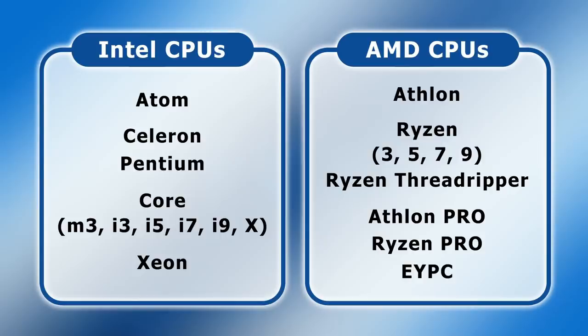As you can see, the range of Intel and AMD microprocessors is pretty complicated and each chip listed is available in lots of different models. So let's now dive in to look at things in more depth, and to do so we first need to consider some key aspects of a CPU's specification.